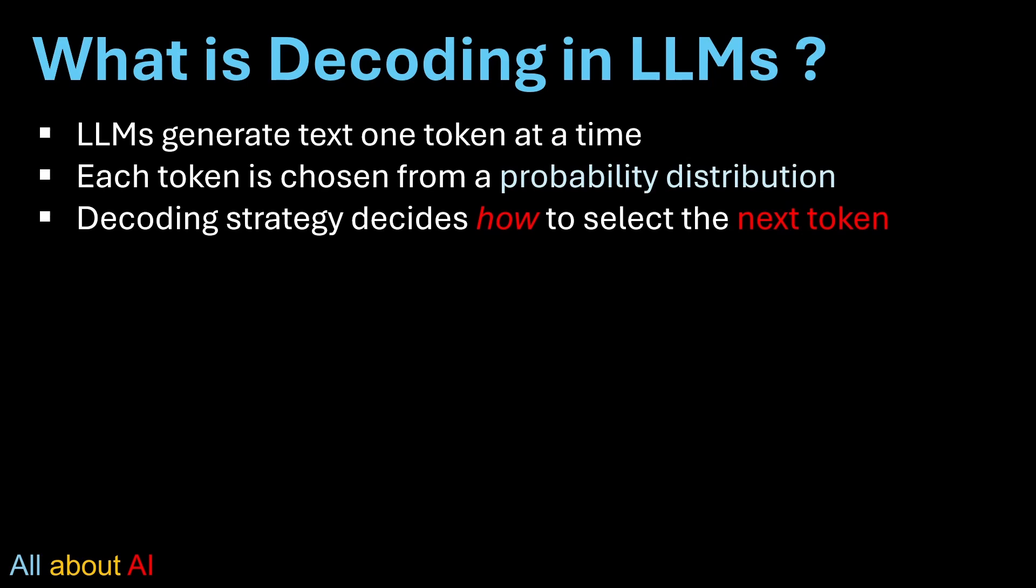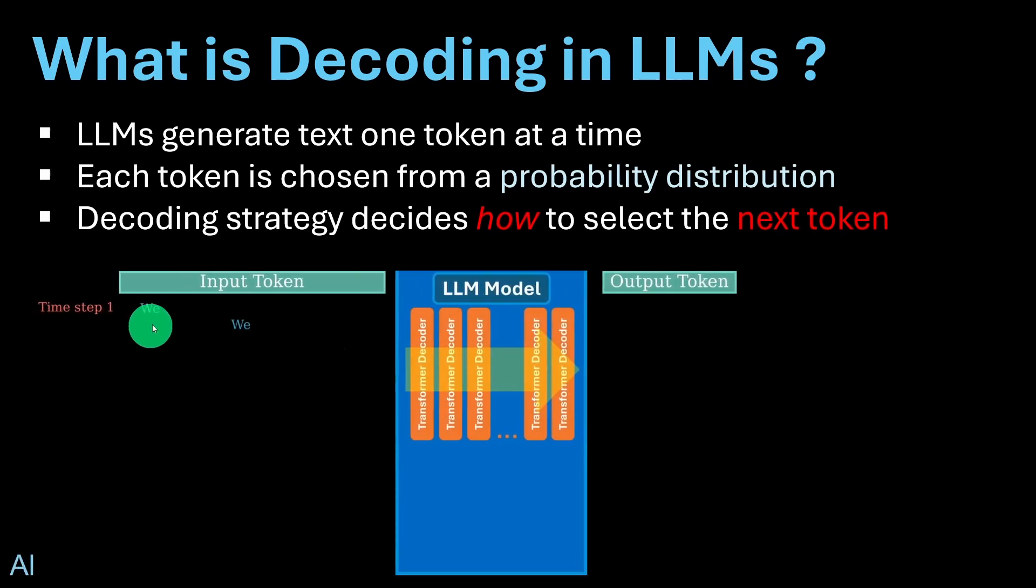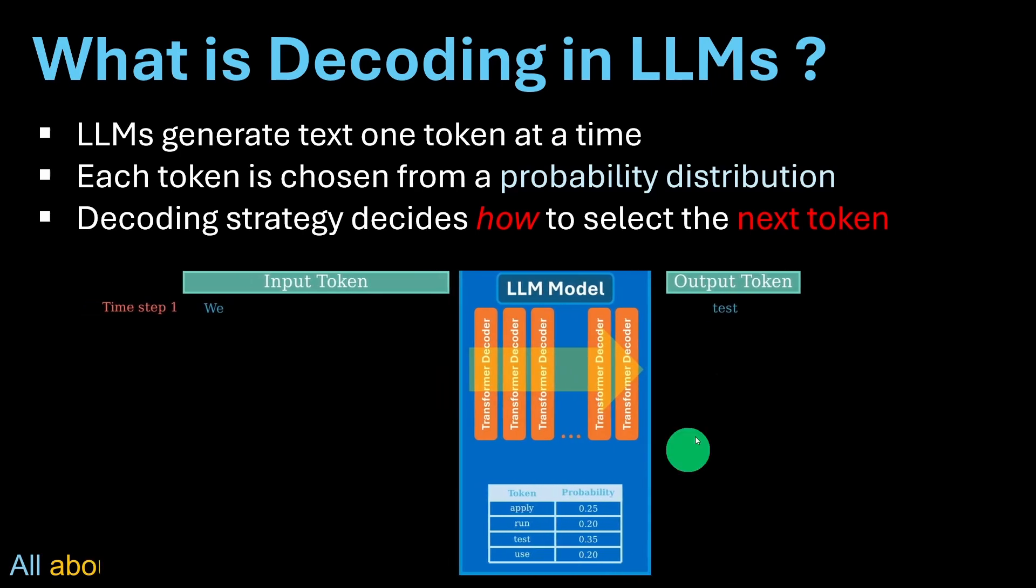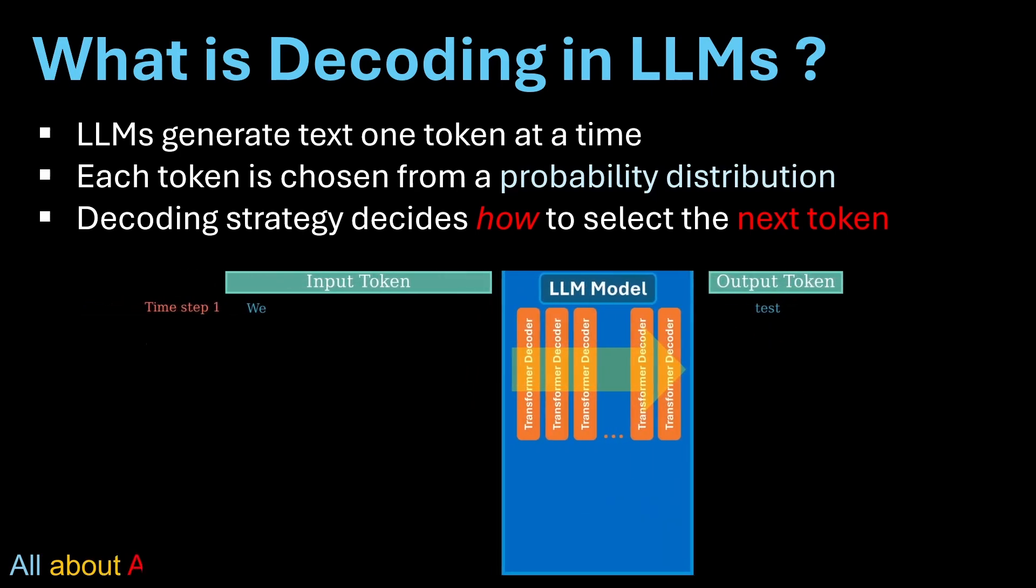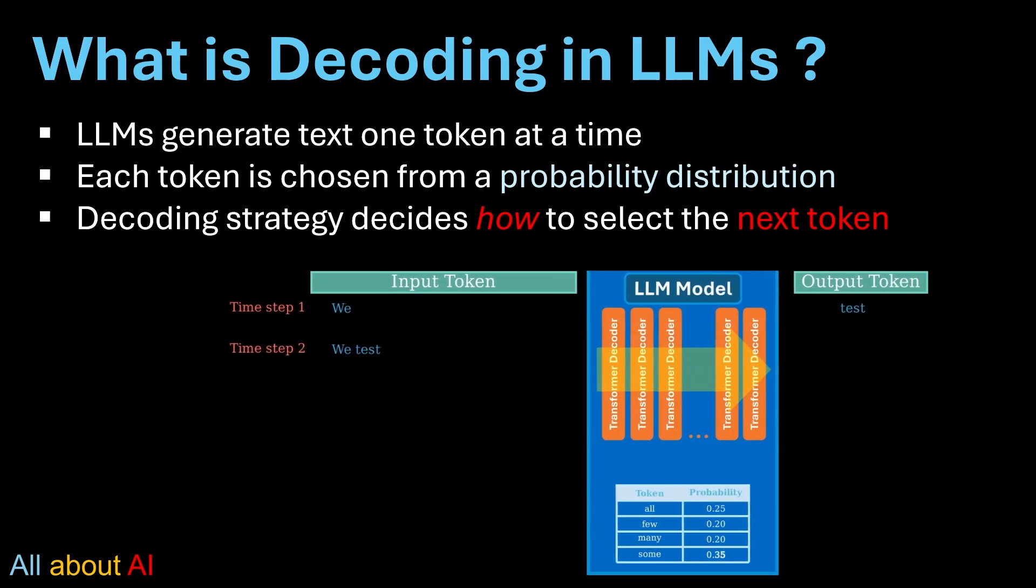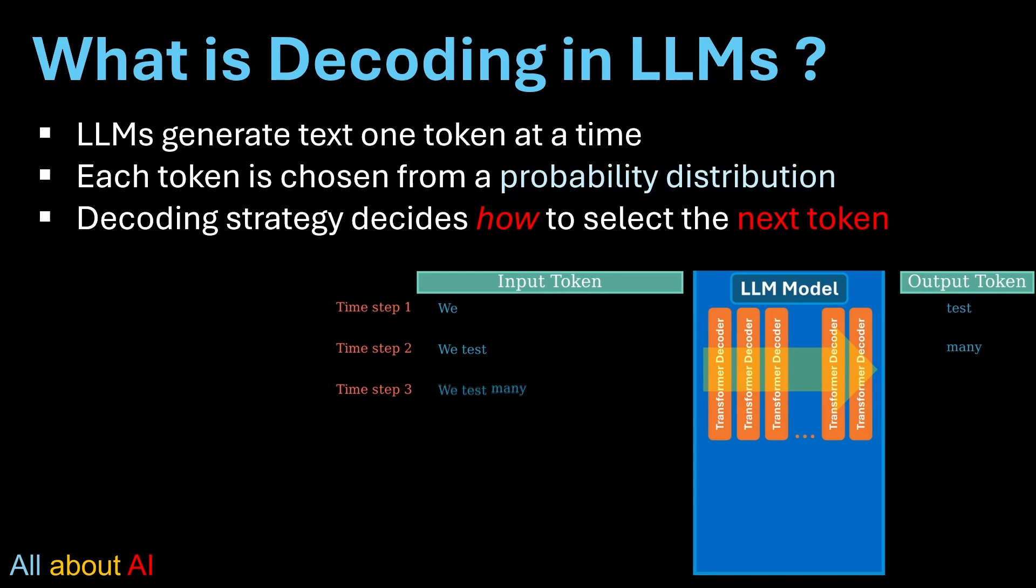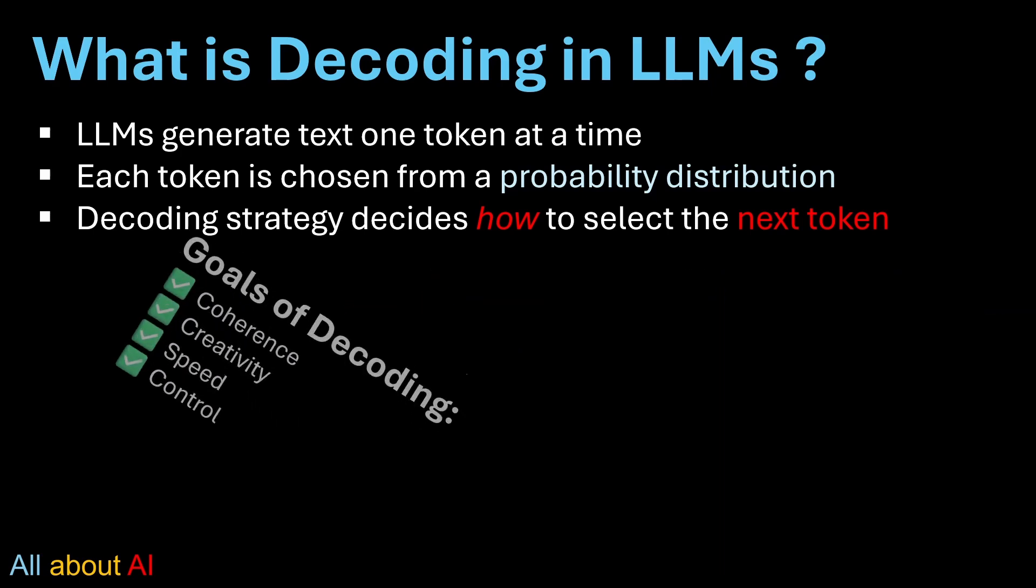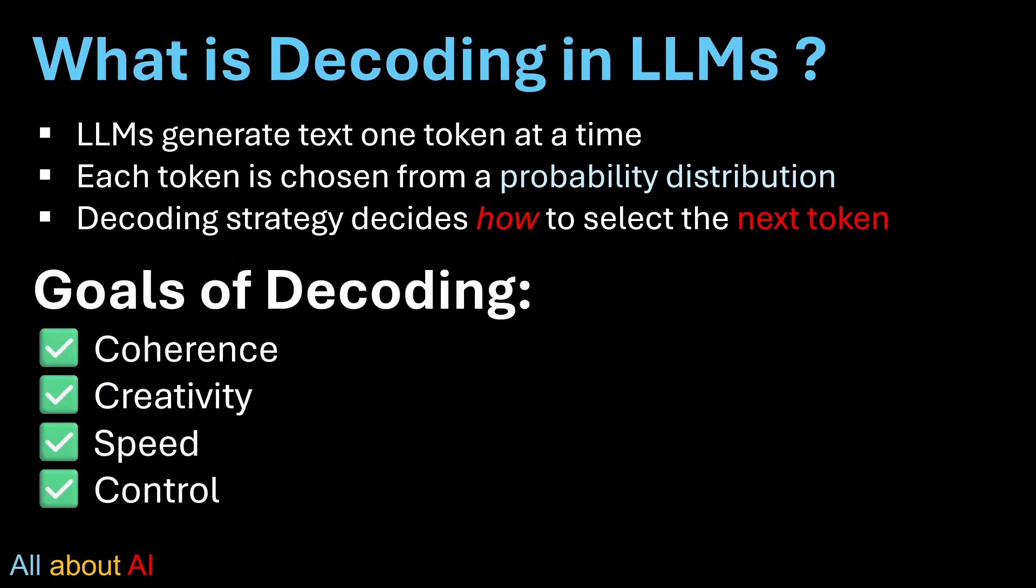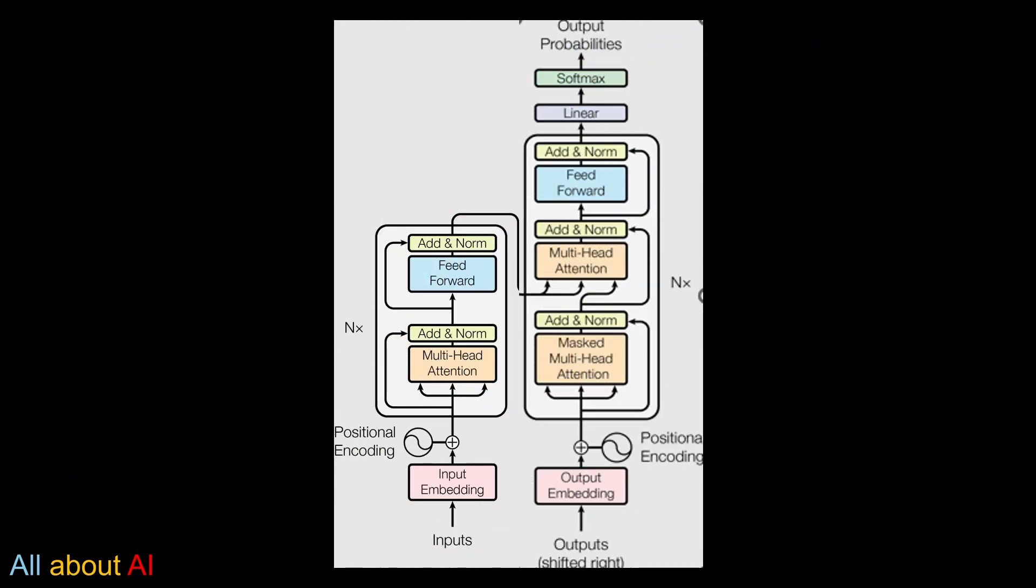When a language model like GPT generates a response, it doesn't generate everything at once. It builds token by token based on probability, but there is a twist. There are many ways to choose the next token and this choice changes everything. Do you want the model to be fast, creative, factual or diverse? Let's first look at how this generation works during inference time.